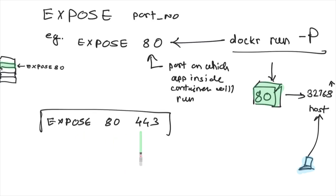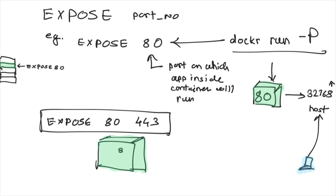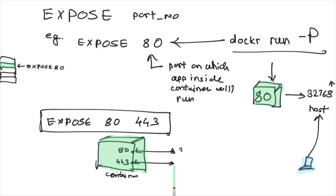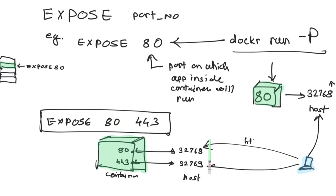You can also expose multiple ports with EXPOSE by providing a space-separated list — for example, 'EXPOSE 80 443'. This will create multiple port mappings: port 80 on the container maps to, say, 32768 on the host, and port 443 maps to 32769. Note that EXPOSE is not a port mapping itself — that is a runtime configuration. One port might be HTTP and another HTTPS, with your application running on both ports inside the container.